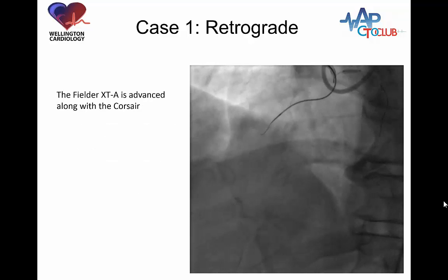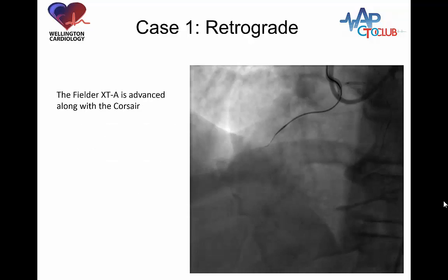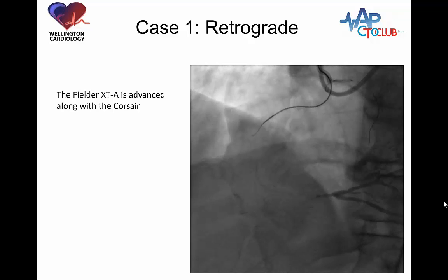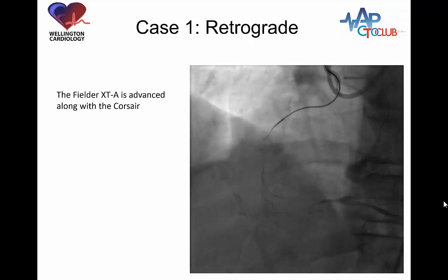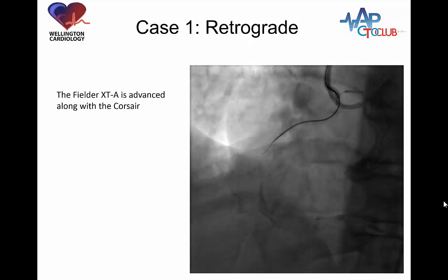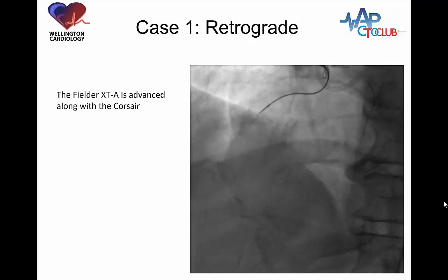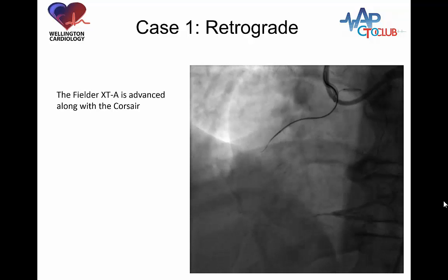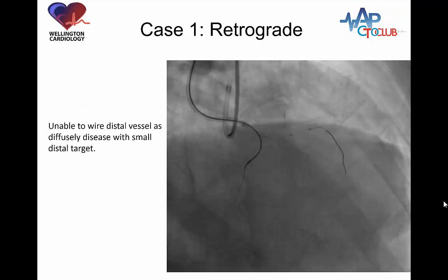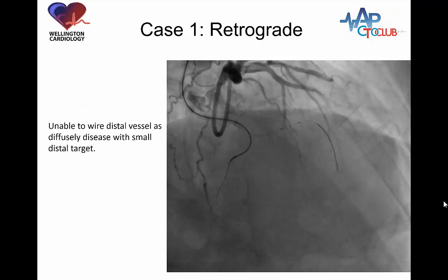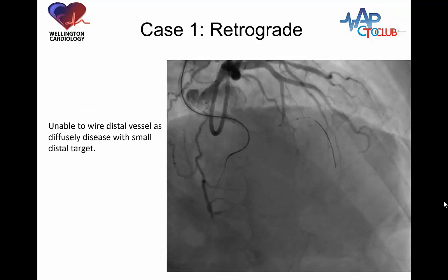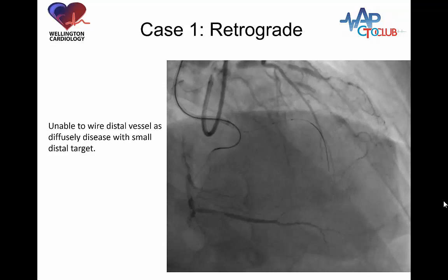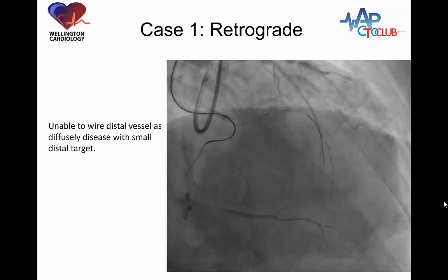We made quite good progress with the XTA and the Corsair, reaching the distal cap, but the distal target is actually very small. Despite our efforts, we couldn't wire the small distal target, so it was time to move retrograde.